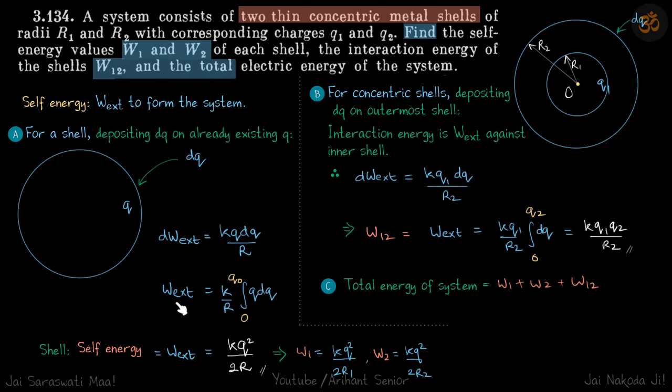Which gives work external total is integral of this. And integral of Q dQ will be Q² by 2. So total self-energy of a shell comes to be kQ² by 2R. Very important result, we are going to use it in at least next 5-6 problems.